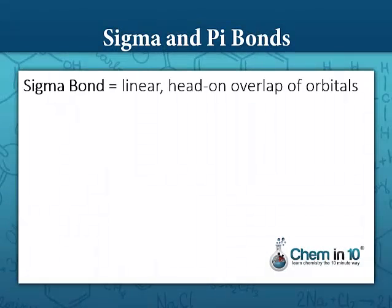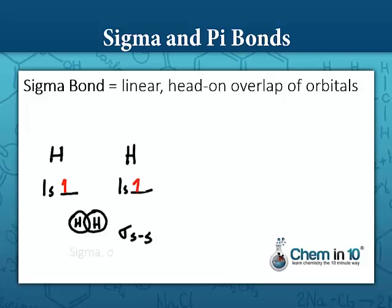A sigma bond is a linear head-on overlap of orbitals. For example, in hydrogen gas, which is a bond between two hydrogen atoms, the s orbitals overlap each other, so that would be a sigma bond.